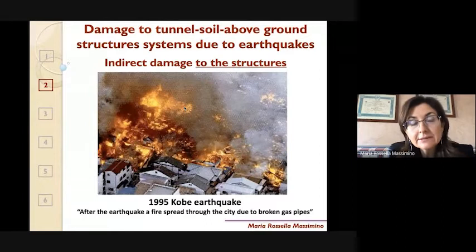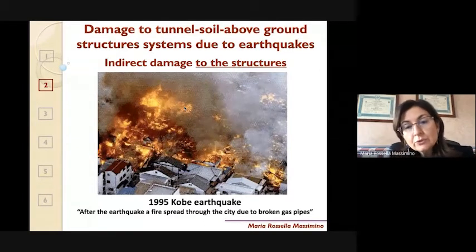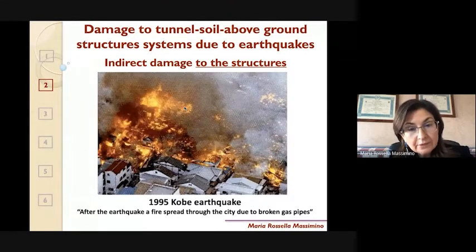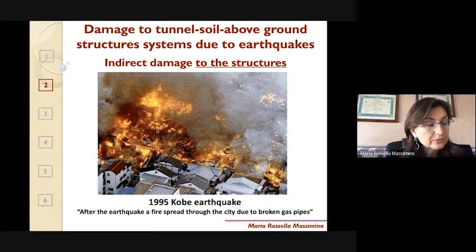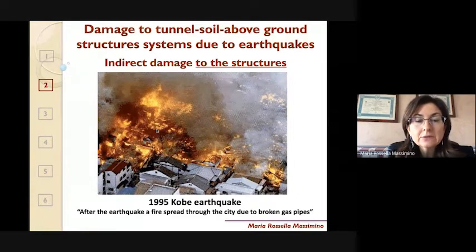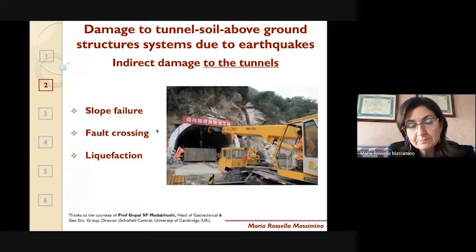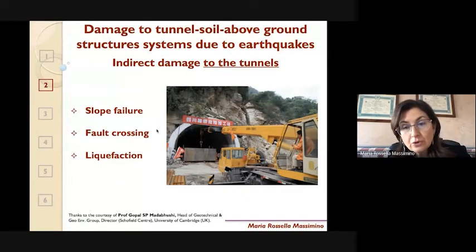Indirect effects on the urban area can also occur, as in the 1995 Kobe earthquake, where after the earthquake a fire spread through the city due to significant cracks in the gas pipeline. So the study of tunnel-soil-above-ground structure systems is very important. Indirect damage can also occur on tunnels due to slope failure, fault crossing, and liquefaction.